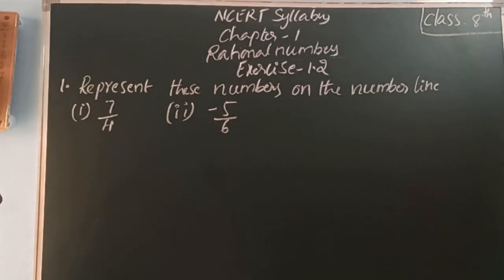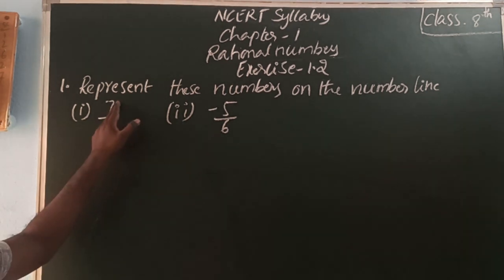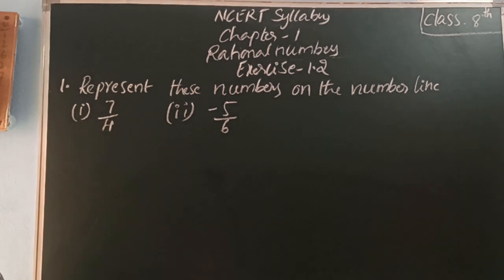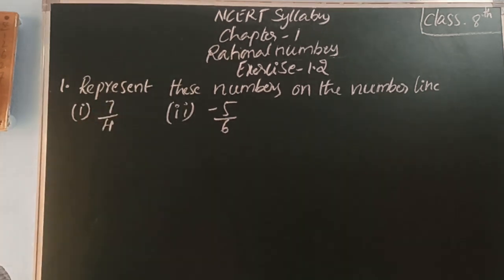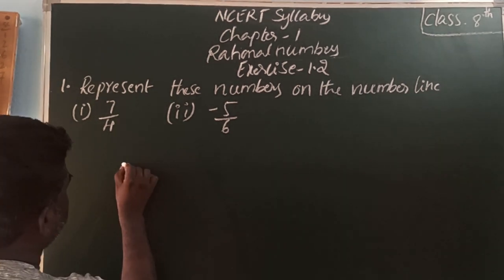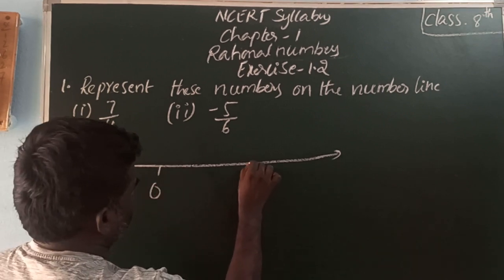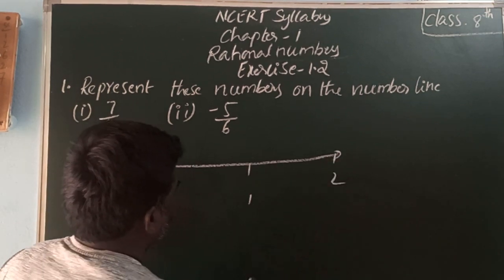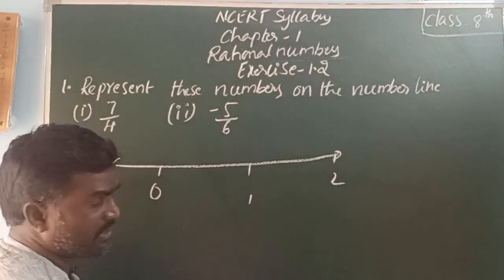The first number given is 7 by 4. 7 by 4 means 7 is out of 4. Here, the numerator is 7 and the denominator is 4. To represent this, we need two numbers on the line, each segment having the same length and same distance. We mark 0 and 1, then 1 and 2. Each interval is divided into 4 equal parts.